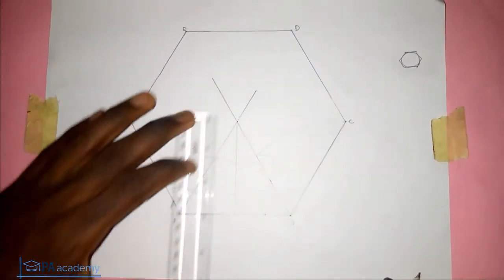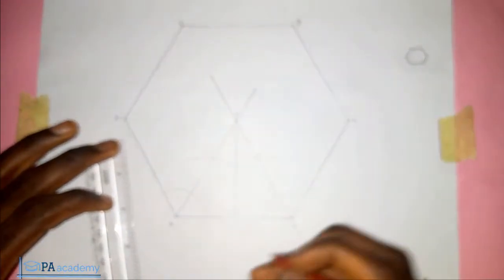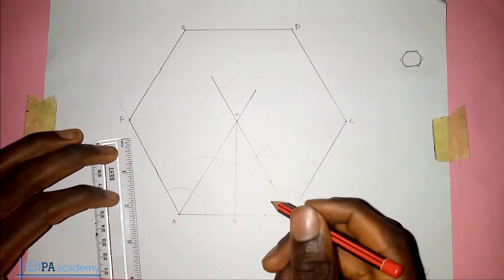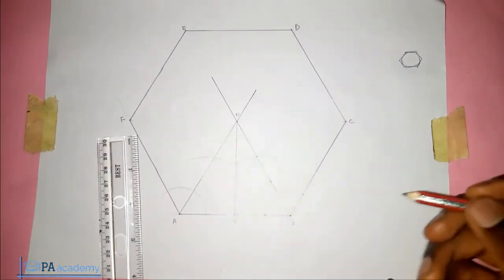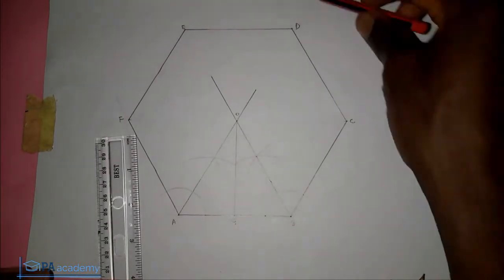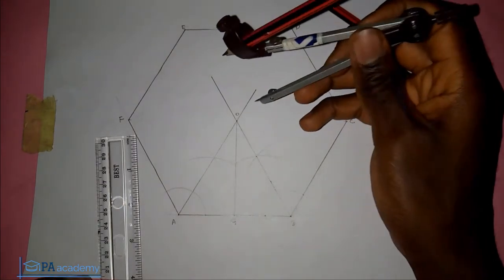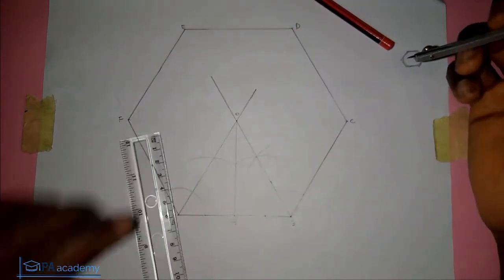If this place is O and we call this place G, that means the length from O to G will represent the radius of the circle. Now the next thing for us to do is to measure OG.